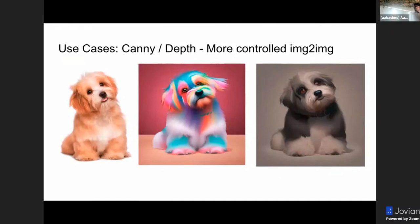Another example is using the Canny and depth combination. In ControlNet, you can use multiple ControlNet models together as well. So you can say you want to use 20% Canny edge detection and 80% depth model as a reference. That sort of blending is also now possible. It allows you to use the same image as a reference and create very different outputs with very minimal effort, while still preserving the same composition.